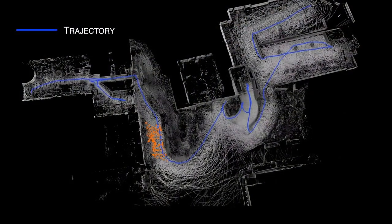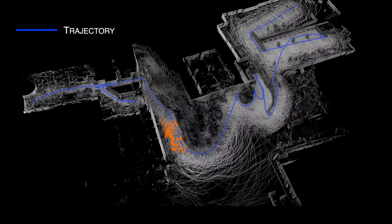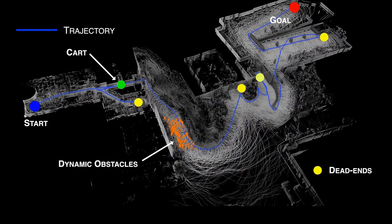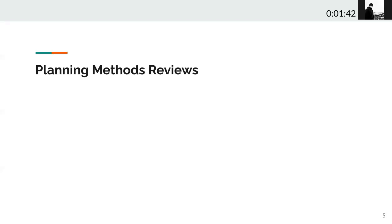And here, we show the final trajectory traversed by the robot. Before we jump onto our method, let's take a look at what existing planners are out there. From a high-level perspective, let's separate those planners into three categories.